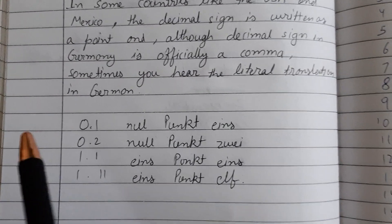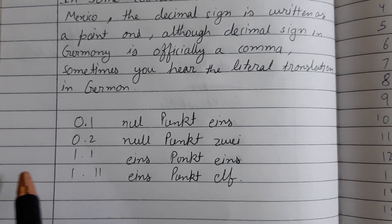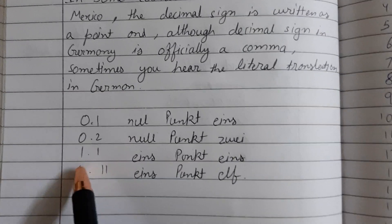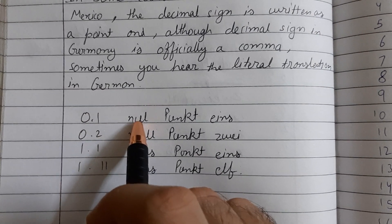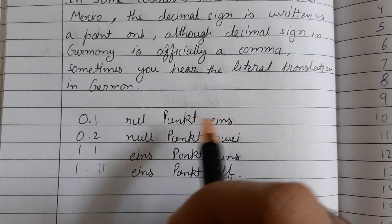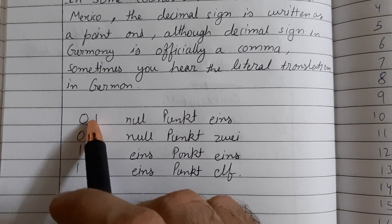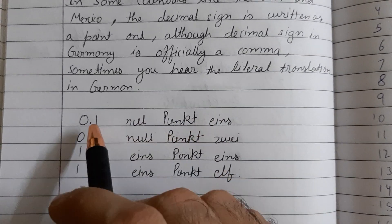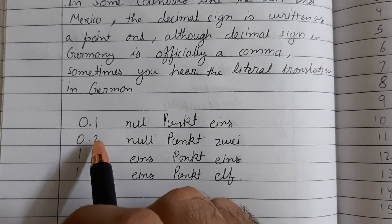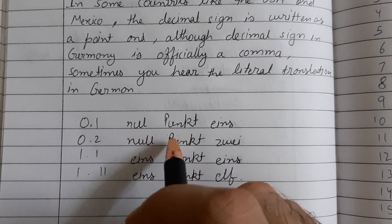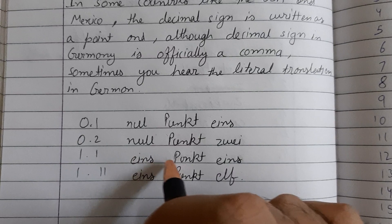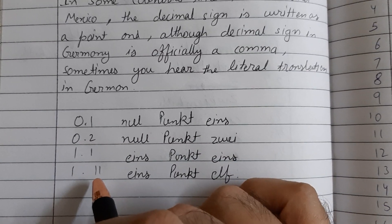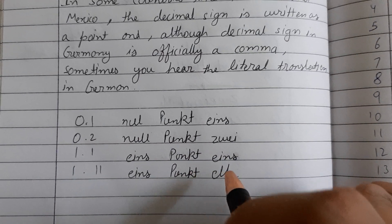Sometimes you hear the literal translation in German, where Germans also write 0.1 as 'null punkt eins' — 'punkt' meaning point. So: 0.2 is 'null punkt zwei', 1.1 is 'eins punkt eins', and 1.11 is 'eins punkt elf'.